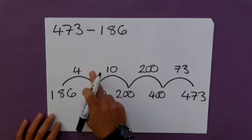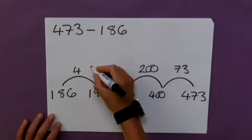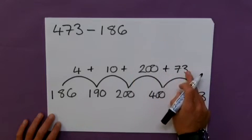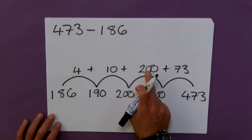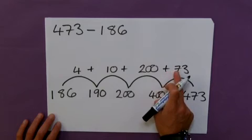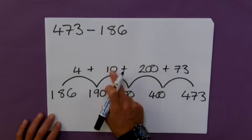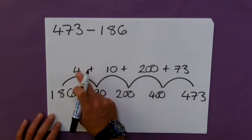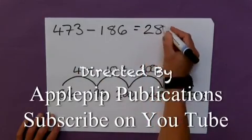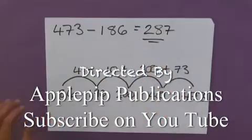And my answer is simply the addition of all of these jumps. 4 plus the 10, 200 plus the 73. Now, for me, I would simply do 200 plus the 73, 273, 283, 287. And that is my final answer. I hope that helps.